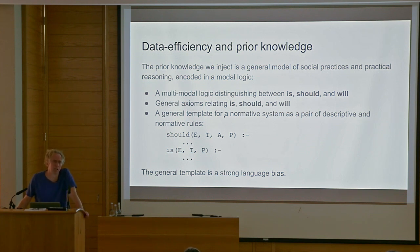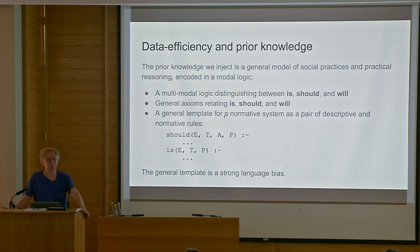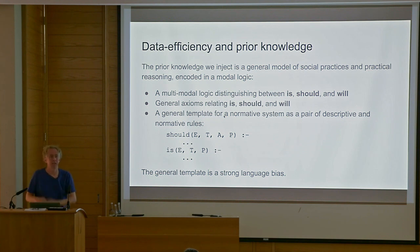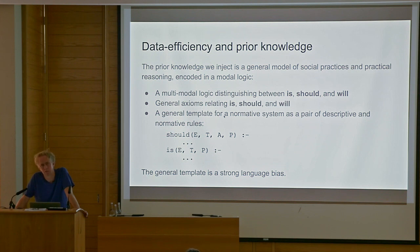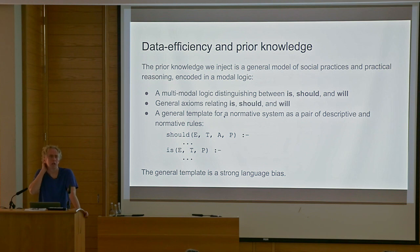An audience member notes that all the agents seem identical in terms of their abilities and knowledge. That's true — there's nothing here about incomplete knowledge. In this model you're imagining yourself as a child watching these agents with complete knowledge. A question about whether there's scope for different capabilities across agents so they can solve problems collaboratively — for example in tidying up. Definitely — the planning system used under the hood would certainly accommodate agents with different capacities, but I'm not currently exploiting that. It's a good idea for future work.